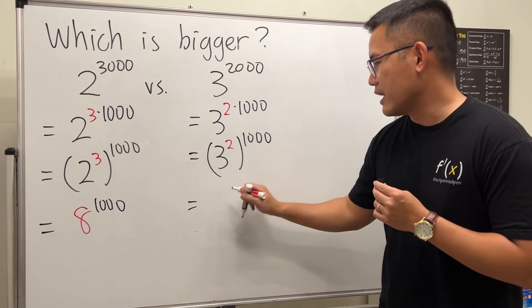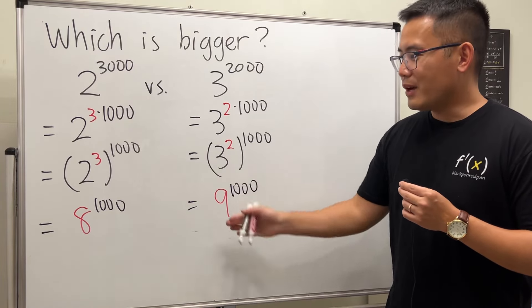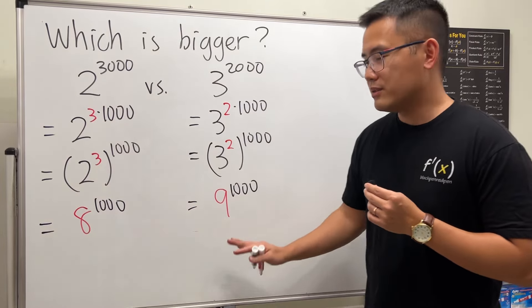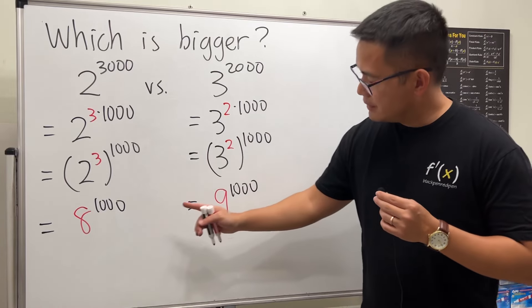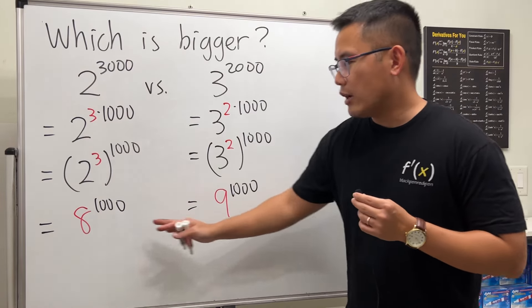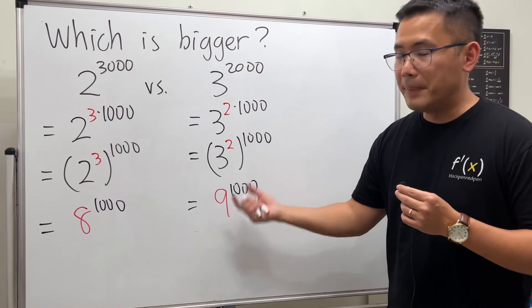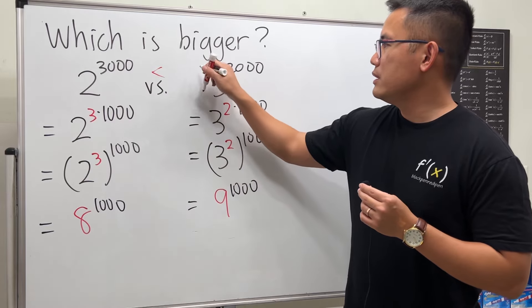Now which one is bigger? They have the same exponent and they are all positive bases, so the one with the bigger base will be bigger. Therefore, 9 to the 1000 is bigger than 8 to the 1000.